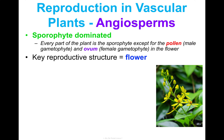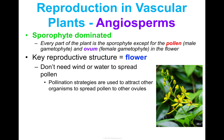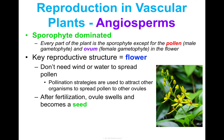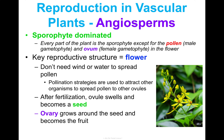The key reproductive structure, which we went over in detail in concept one, is the flower. Angiosperms don't need wind or water to spread pollen because of the flower structure — they utilize pollination strategies that attract other organisms like animals to spread their pollen to other ovules. After fertilization, when the egg and sperm meet, the ovule swells up and becomes a seed, providing nourishment for the growing plant. The ovary grows around the seed to protect it, and once it ripens, that becomes the fruit.